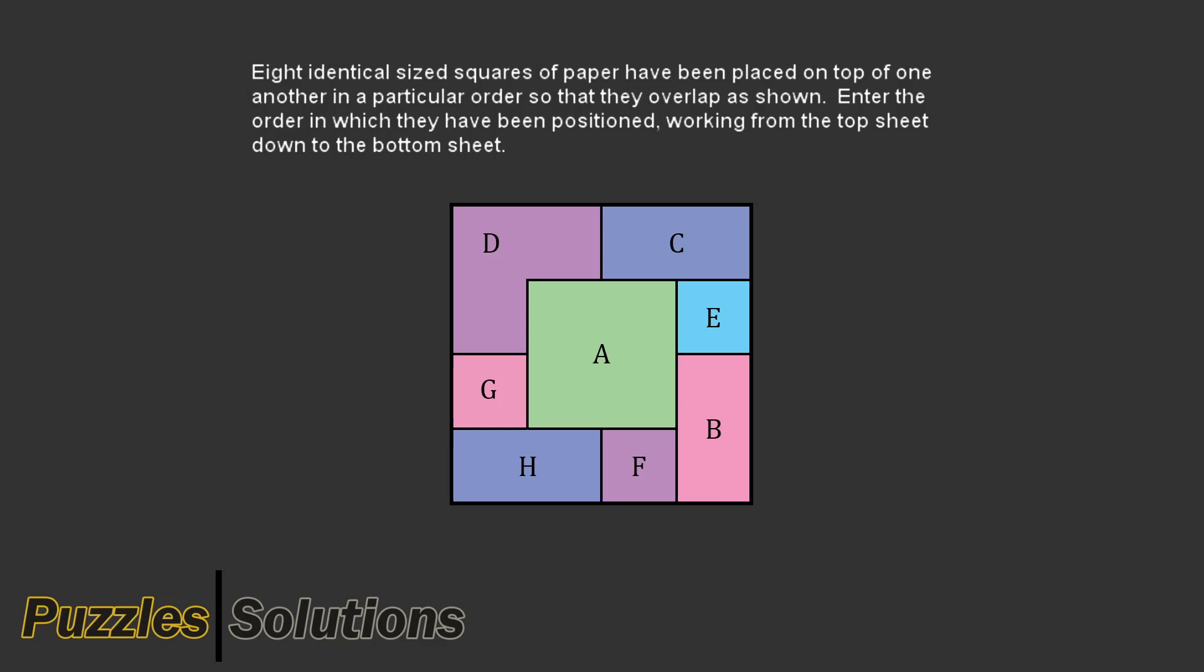Puzzle 13 from matrix 67. Eight identical sized squares of paper have been placed on top of one another in a particular order so that they overlap as shown. Enter the order in which they have been positioned working from the top sheet down to the bottom sheet.